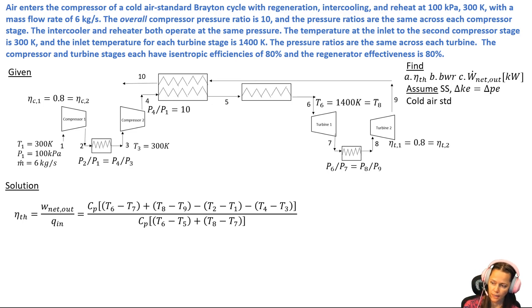Then we look at the denominator, the QIN. We've got a heat addition process between 5 and 6, this is where we're modeling the combustion process as a constant pressure heat addition process.